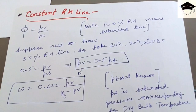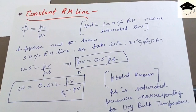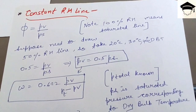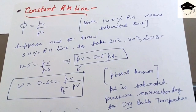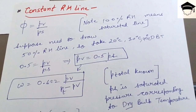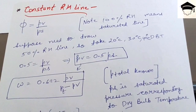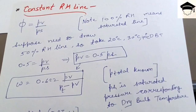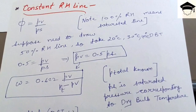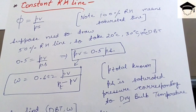The point on the chart is represented as (x, y), where x is the dry bulb temperature and y is omega. On the psychrometric chart, the dry bulb temperature is on the x-axis and omega (specific humidity) is on the y-axis.